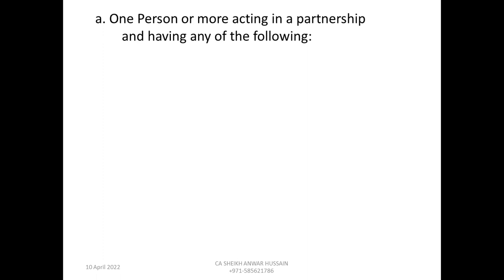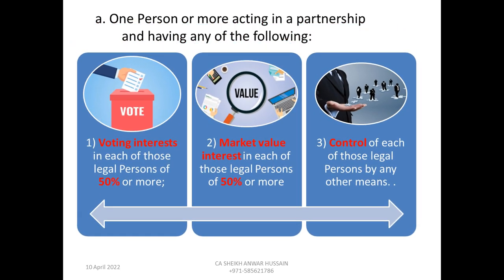One person or more acting in a partnership and having any of the following: if any one of these three conditions is fulfilled, they can form a tax group. The first condition is voting interest in each of those legal persons of 50% or more. For example, one shareholder has invested 60% in Company A, 55% in Company B, and 70% in Company C — these three companies can form a tax group because there is a common shareholder holding more than 50% in all of them.